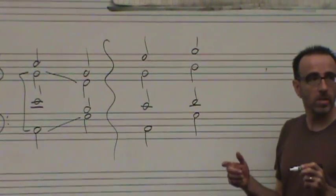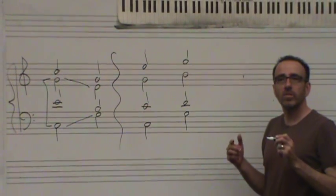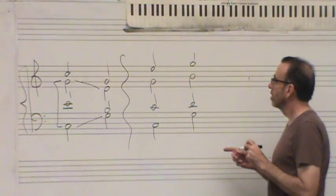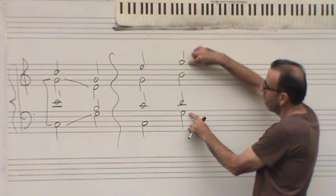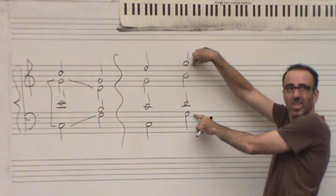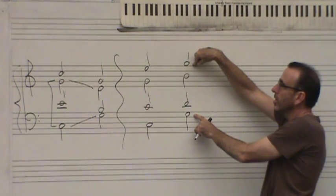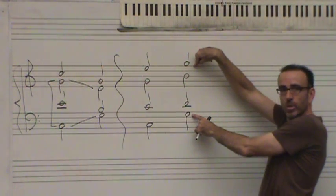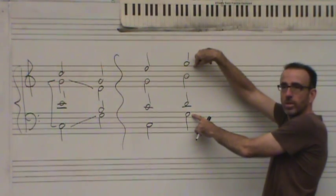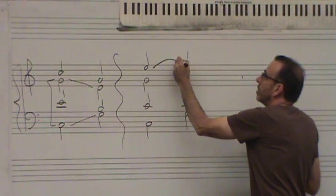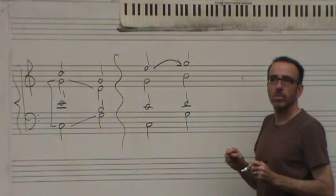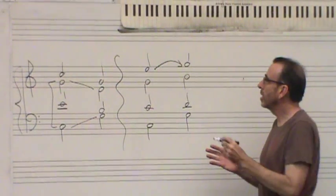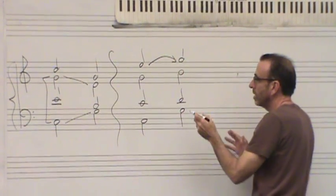Okay, so direct octaves or fifths are similar motions to an octave or a fifth with a leap in the soprano. So what that is, is here's the octave that I end up with. So I approach that octave in similar motion to an octave with a leap in the soprano part. If I had done it by step, I would have been okay. But if I've got the soprano leaping, then it doesn't work.